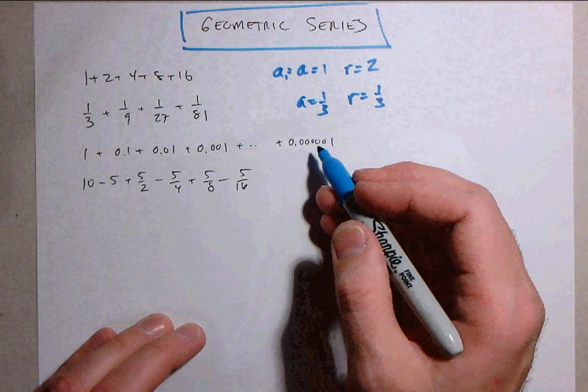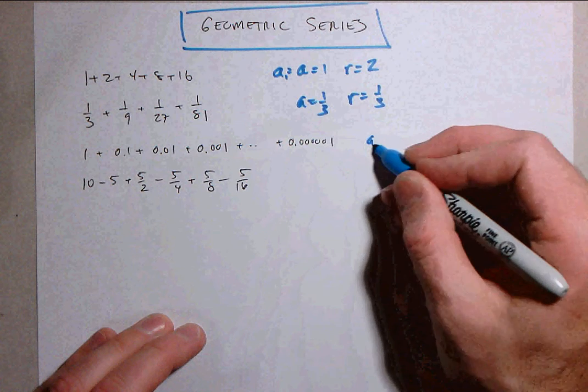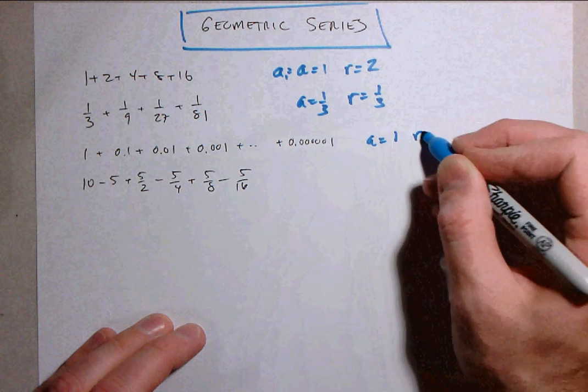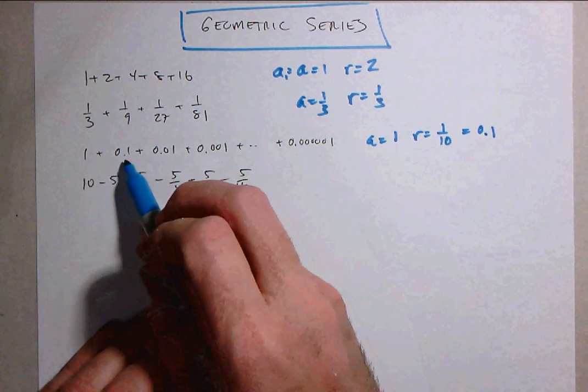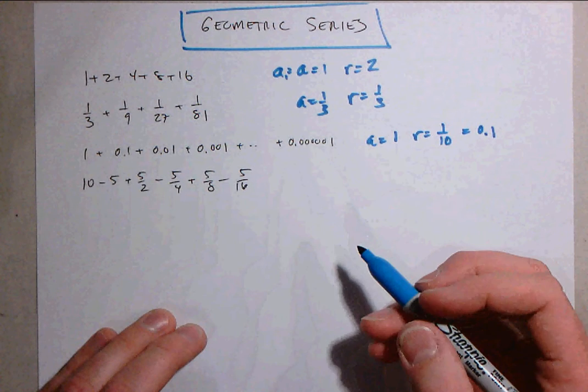In this example the first term is a third and the common ratio is also a third. This is maybe a little less obviously a geometric series but the first term is 1 and the common ratio is 1 tenth which we could also write as 0.1. We multiply by 1 tenth to get from term to term here.